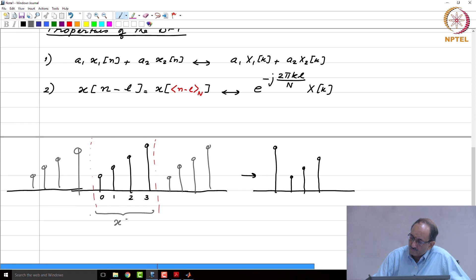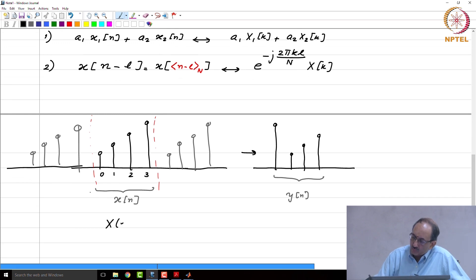If you call this as x of n and if you call this as y of n, there is no connection between x of e to the j omega and y of e to the j omega. However, the DTFTs are related like this. When I say this is x of n, I mean x of n is these samples from 0 to 3 and they are 0 otherwise. Similarly, when I say y of n and y of e to the j omega, I mean y of n is this sequence and it is 0 outside. Therefore, the transforms x of e to the j omega and y of e to the j omega are unrelated, but their DFTs are. Because moment you bring this into the DFT framework, you have to make them periodic and then the relationship immediately follows.